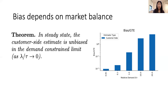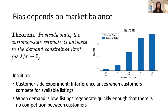The first thing we find is that the bias of these estimators depends heavily on market balance. In the plot on the right, we show how bias changes in a customer-side experiment as you increase the relative demand in the marketplace. The bias is very large when there's a lot of demand, but it decreases when demand is smaller. We prove as a theorem that in steady state, the customer-side estimate is actually unbiased in the demand-constrained limit when there's very little demand. The intuition is that interference arises when customers compete for the same listings — when one customer books a listing it's unavailable for the next. But when demand is low, listings regenerate quickly enough that all listings will be available for the next customer, so there's actually no competition between customers.